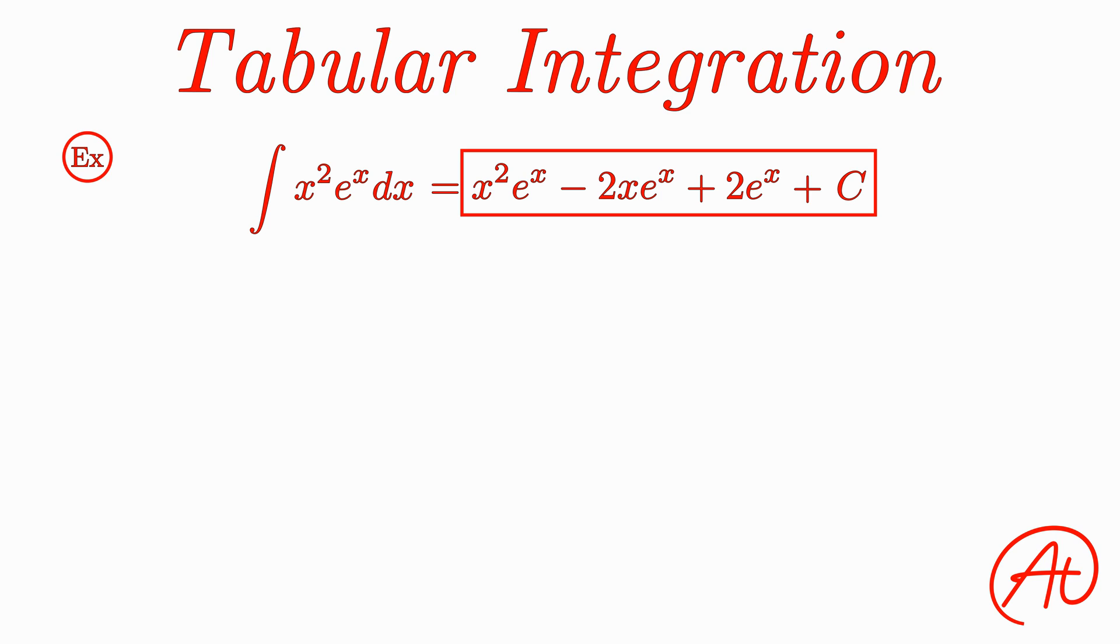For our example, we make x squared equal to u, and taking the derivative of that again and again will eventually result in 0. So we can use this method. Just as the name suggests, we clean up this process by using a table. And let's fill in each of the functions from our integral into one of the table columns.